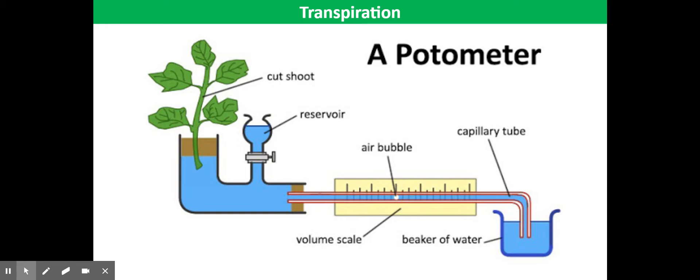Using a potometer is a straightforward method once it is set up. Water vapor lost by the leaves is replaced by the water in the capillary tube. The movement of the meniscus at the end of the water column can be measured.